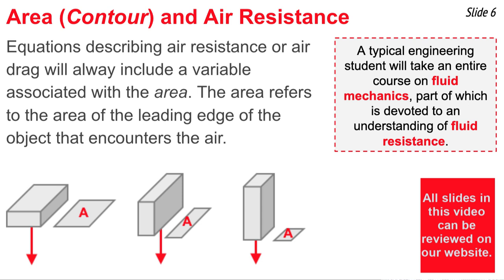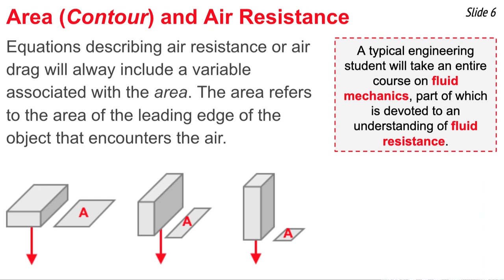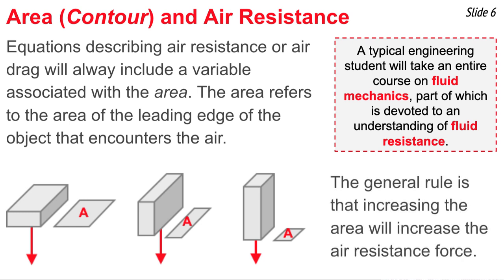When it comes to the area, the area refers to the area at the leading edge of the object that's encountering the air. Every air resistance equation includes some sort of variable known as the area. Here we see the same object falling through air, but it's been oriented in three different orientations. It's the same object on the left, the middle, and the right, but in each case it's been flipped around sideways, such that the leading edge's area changes.